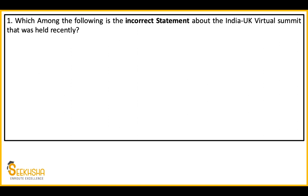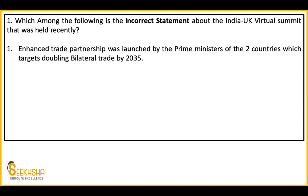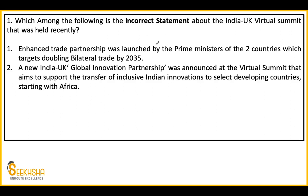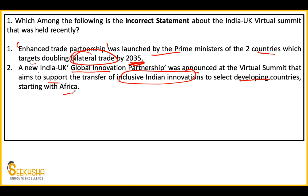You have been given some statements and you have to tell which statement is incorrect. First statement: Enhanced Trade Partnership was launched by the Prime Ministers of the two countries, which targeted doubling bilateral trade between India and UK by 2035. Second statement: A new India-UK Global Innovation Partnership was announced at the virtual summit, that aims to support the transfer of inclusive Indian innovation to select developing countries, starting with Africa.